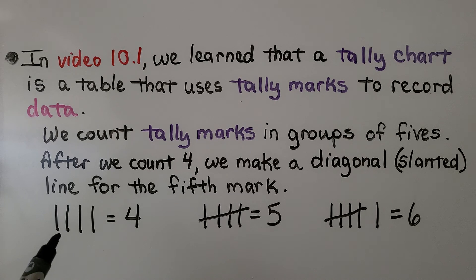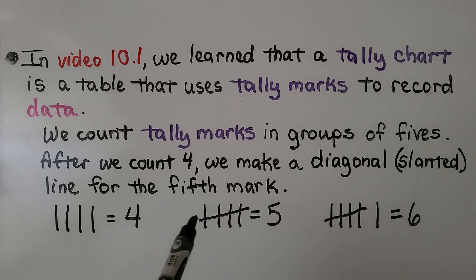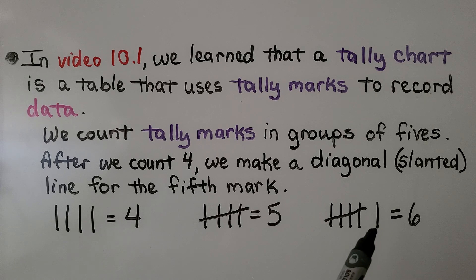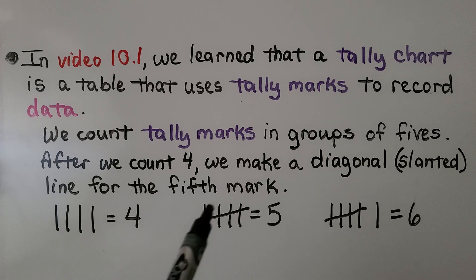So four tally marks stand for four. When we cross four marks with a diagonal line, that shows five, and one more mark makes six — five and one more is six. Then we can quickly skip count by fives by counting each group as a five.